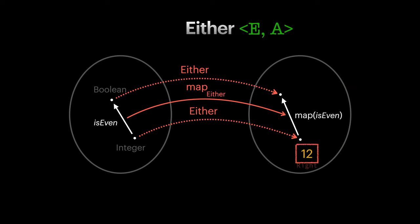So when map of is even receives a value like 12 wrapped in right, it applies is even to the value and returns right of true. But if it receives a left value like a string error, it simply returns that left value as is.